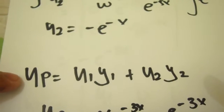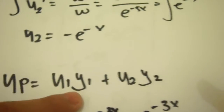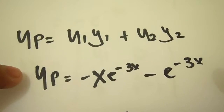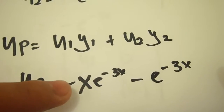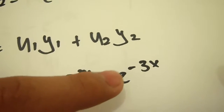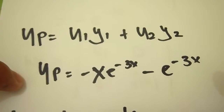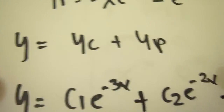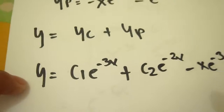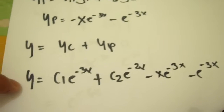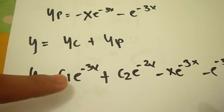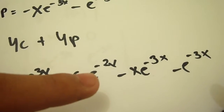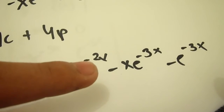Now we can form yp using u1, y1, u2, and y2. Substituting, yp equals negative x e to the negative 3x minus e to the negative 3x. Since we already have yc, we substitute everything to get the final answer: y equals c1 e to the negative 3x plus c2 e to the negative 2x minus x e to the negative 3x minus e to the negative 3x.